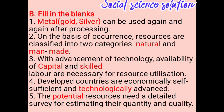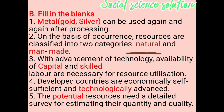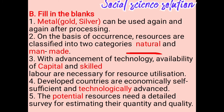Fill in the blanks. The answers are written in red color. First blank: metal can be used again and again after processing. On the basis of occurrence, resources are classified into two categories: natural or man-made. Advancement of technology, availability of capital, or skilled labor are necessary for resource utilization. Developed countries are economically self-sufficient and technologically advanced. Potential resources need a detailed survey for estimating their quantity and quality.